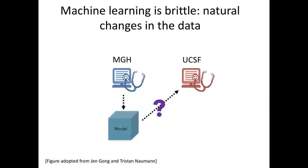A third example is when you go across institutions. Both the language used — think of a hospital in the United States versus a hospital in China where clinical notes are written in completely different languages — and even a less extreme case of two different hospitals in Boston where the acronyms or shorthand used for clinical terms might actually be different because of local practices.